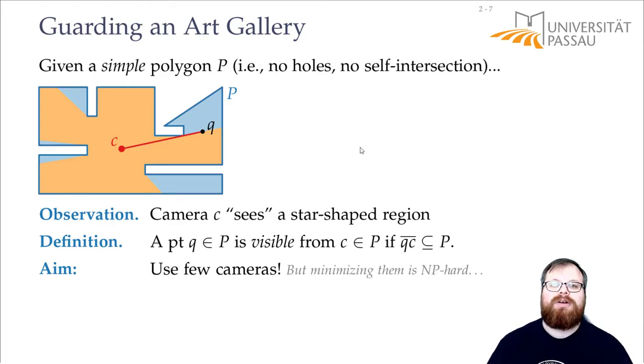The bad thing is that this problem is NP-hard. So minimizing the number of cameras is very tough. We don't know how to do it efficiently. But we can find a very good solution. And this is something that we want to do in this lecture. To find a good solution, we will use a technique that's very standard in computational geometry.